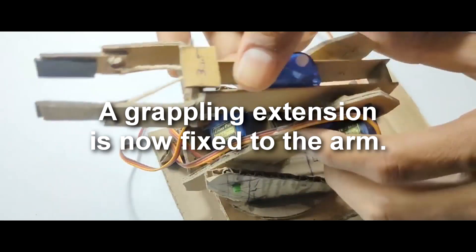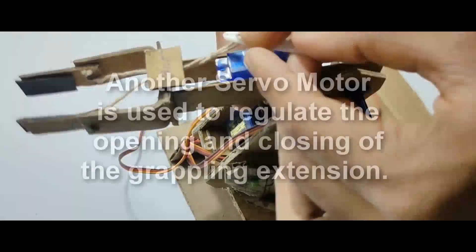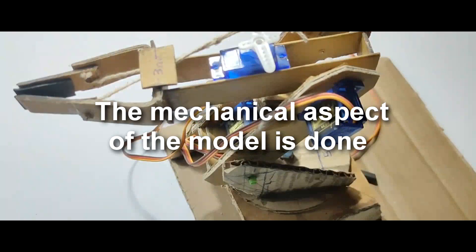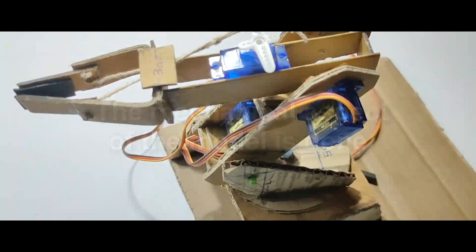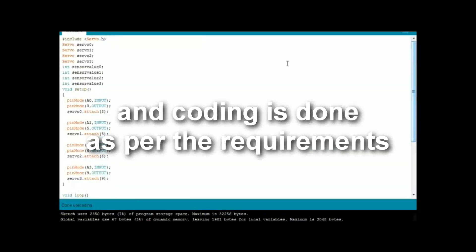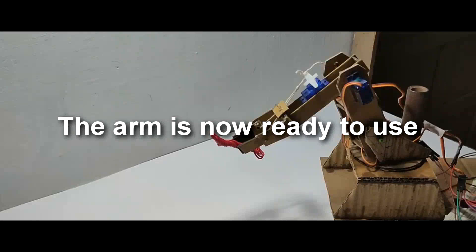A grappling extension is now fixed to the arm. Another servo motor is used to regulate the opening and closing of the grappling extension. The mechanical aspect of the model is done. Now the servo motors are connected to the Arduino Uno and coding is done as per the requirements. The arm is now ready to use.